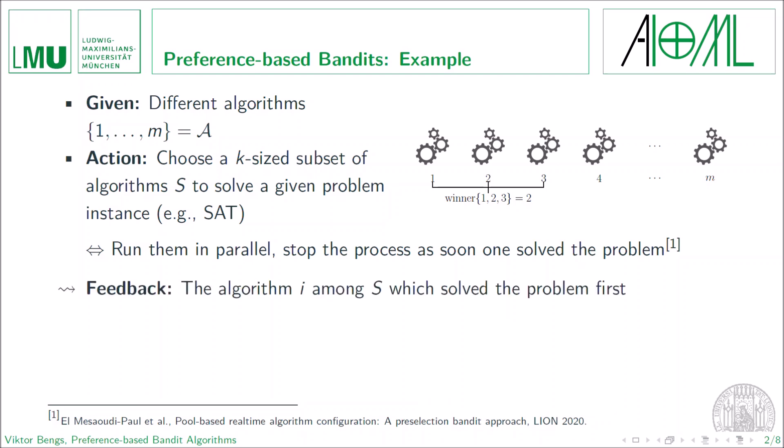In this way, our preference-based feedback, namely the winner of the preselection, is the algorithm which has solved the problem first. And here, the assumption of a stochastic feedback mechanism makes perfect sense due to several reasons, and the two most obvious reasons are that the algorithms themselves could be random or the occurrence of the problem instance.